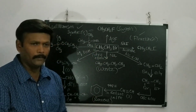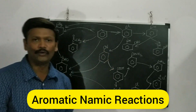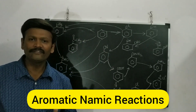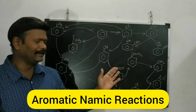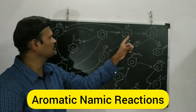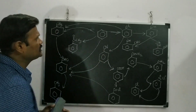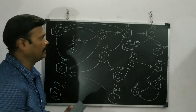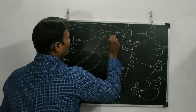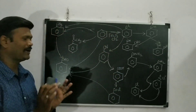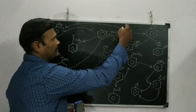Now let us discuss the roadmap for aromatic naming reactions and aliphatic naming reactions, including some common to both. We start with benzene, which we prepared from aliphatic compounds in the earlier stage. Benzene is converted into chlorobenzene by passing Cl2 gas in the presence of FeCl3 as a catalyst.